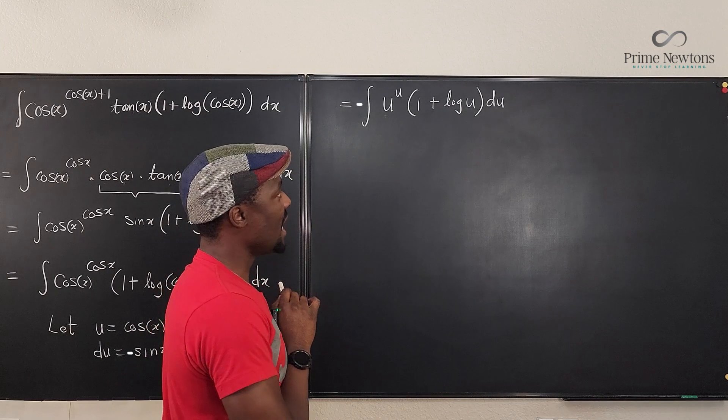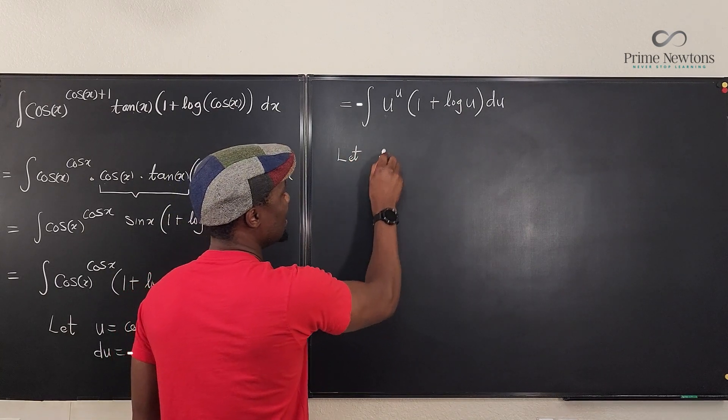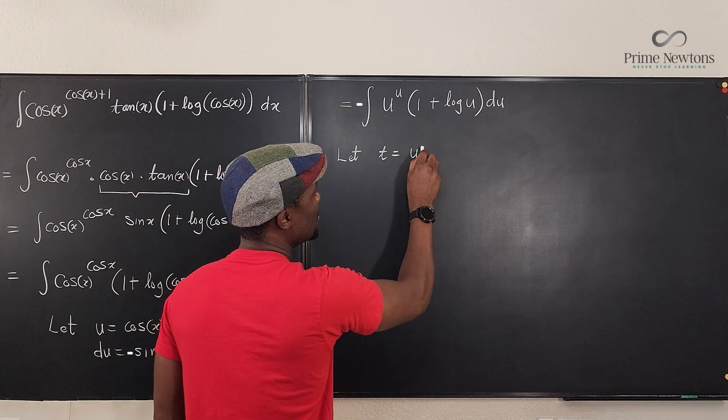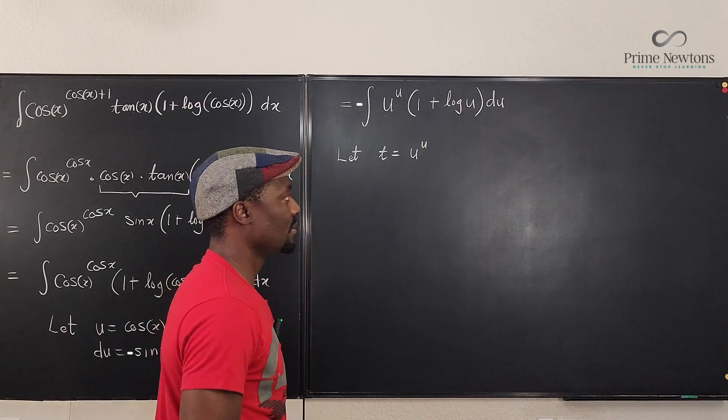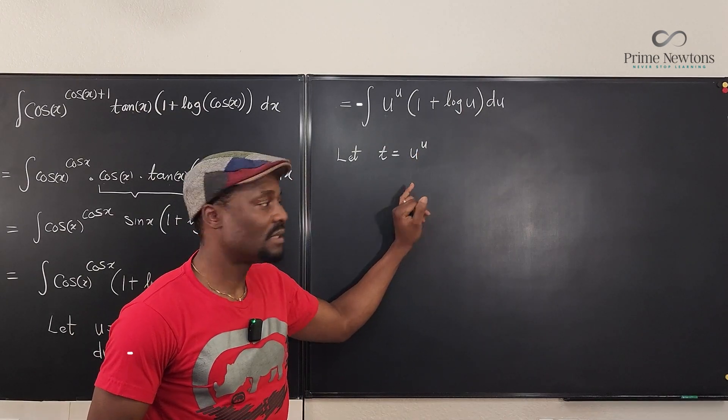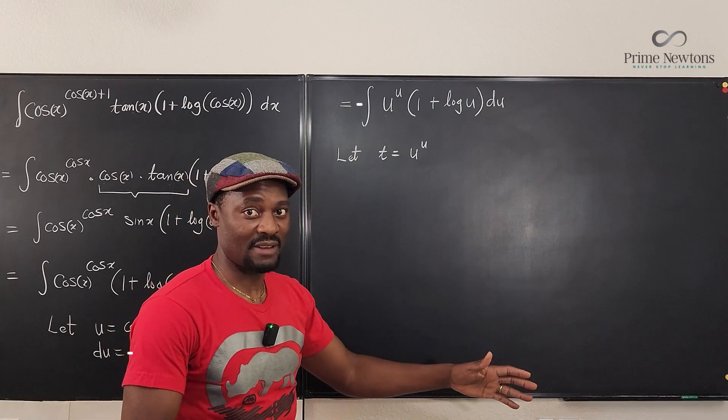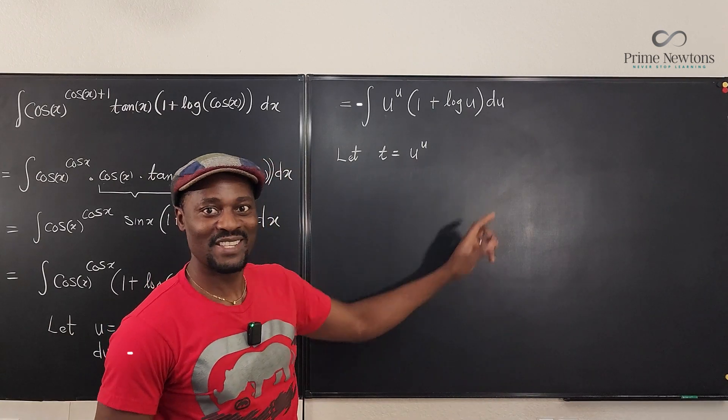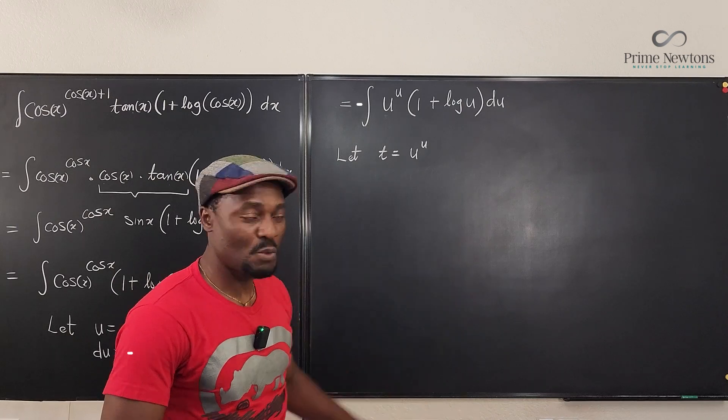So what I'm going to say is, let t be equal to u to the u. Now I'm supposed to differentiate both sides. But this is not easy to differentiate just like that. We can't bring down the u and apply the power rule. So we're going to say, what we're going to do is take the natural log of both sides.